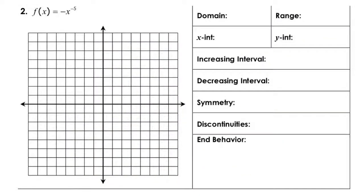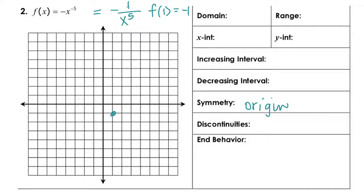For −x^(−5), rewritten as −1/x^5: the exponent is odd, so we are symmetric about the origin. Plugging in x = 1 gives f(1) = −1, so the point (1, −1) — over 1, down 1. By origin symmetry, in the second quadrant we need a negative x and positive y, giving (−1, 1). Connecting these points, this resembles the reciprocal function flipped over the axis.